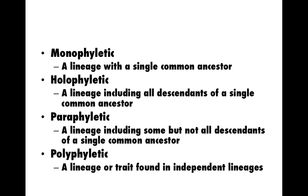We can describe lineages using some of these big fancy words — they all contain the suffix 'phyletic,' referring to their evolutionary history. A monophyletic lineage, or monophyletic clade, is a lineage that has a single common ancestor — everything diversified from a single ancestor. Holophyletic is a word you won't see in your textbook, but we usually use monophyletic and holophyletic synonymously. When we talk about a monophyletic lineage, we usually mean that it includes all the descendants of that single common ancestor. Paraphyletic — para means 'on the side' — and a paraphyletic lineage includes some but not all descendants of a single common ancestor.